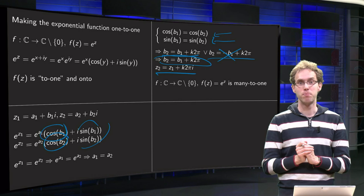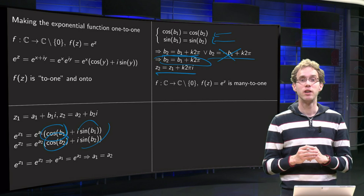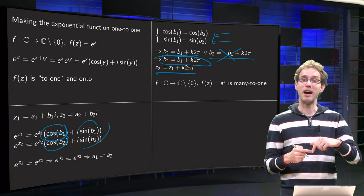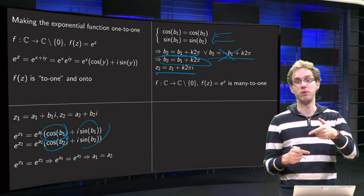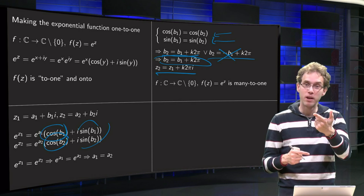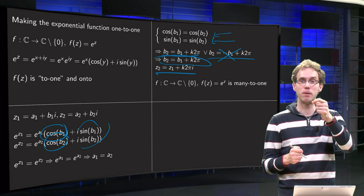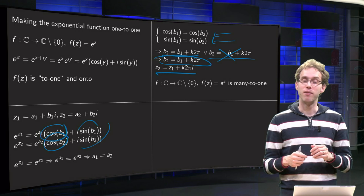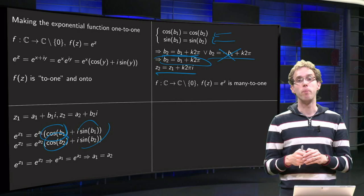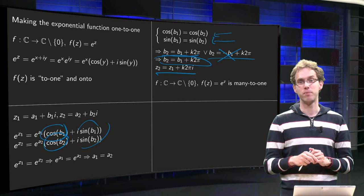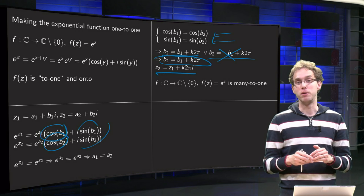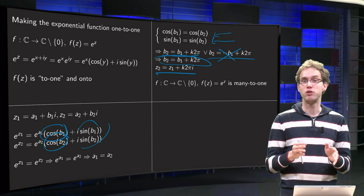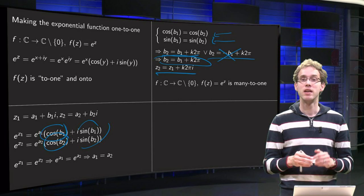So how many points are mapped to the same point? If you take the point 0, it is mapped to 1, but 2πi is also mapped to 1, and 4πi as well, and −2πi too. All those points with imaginary parts differing by 2π are all mapped to the same point in the image plane. So f(z) is not just many-to-1, but infinitely many-to-1.